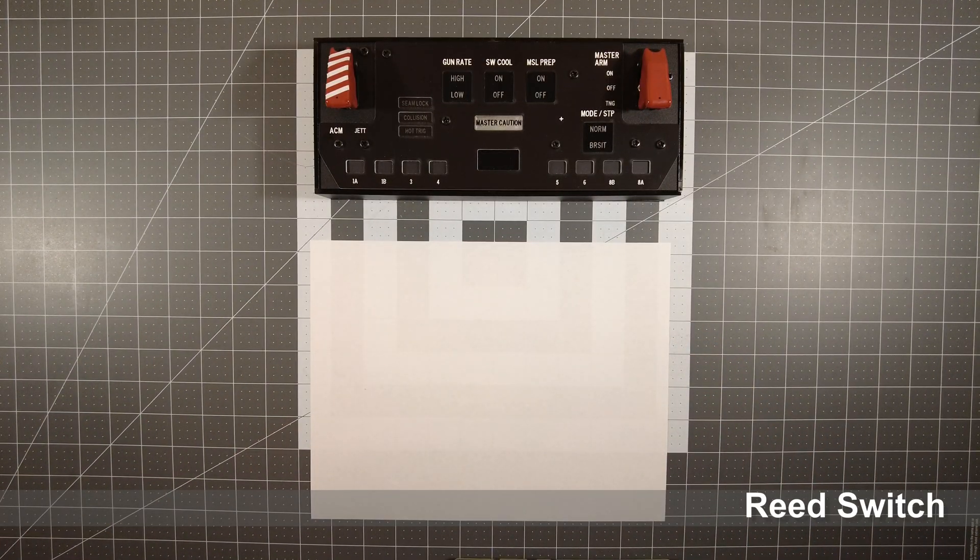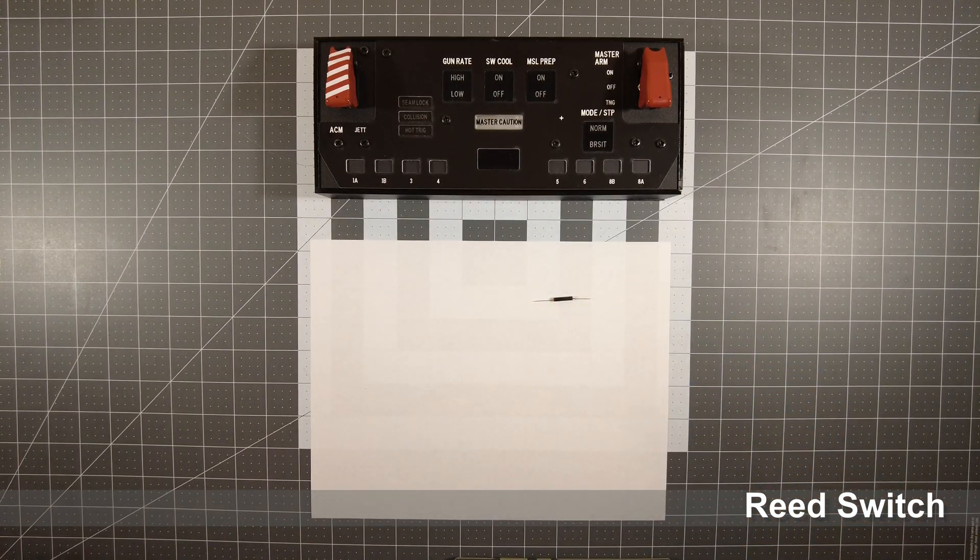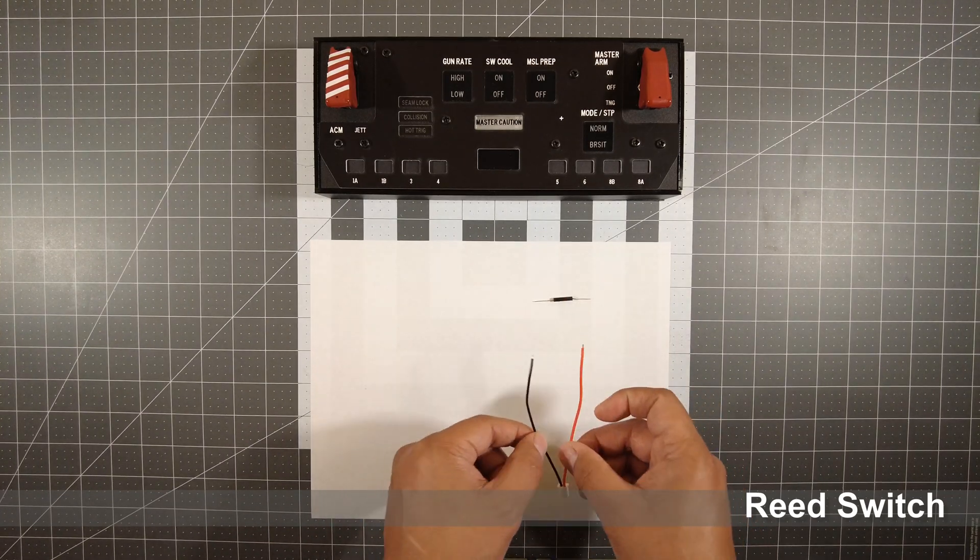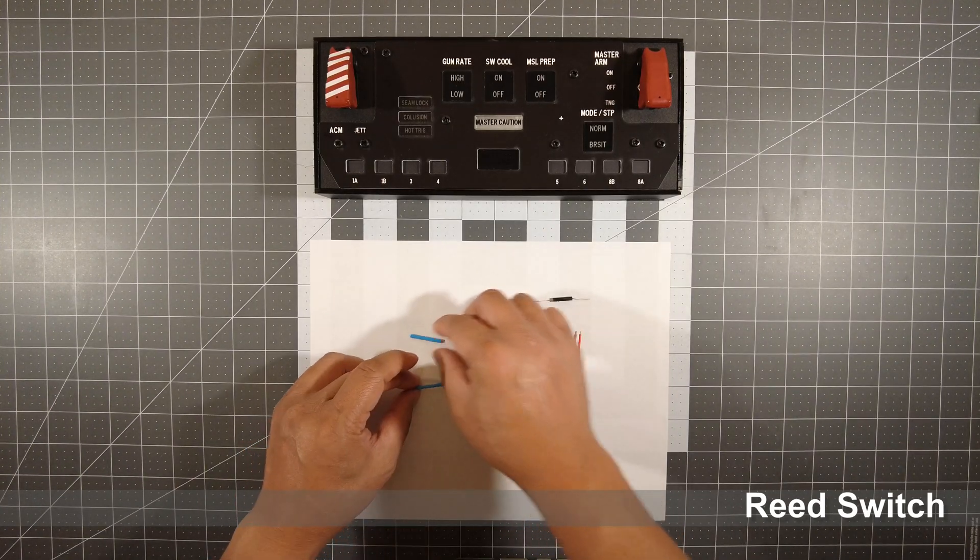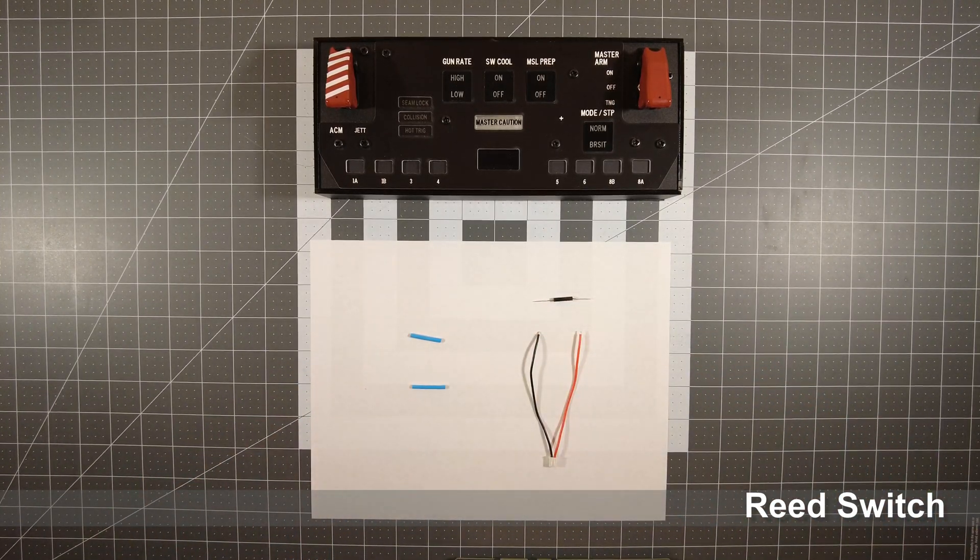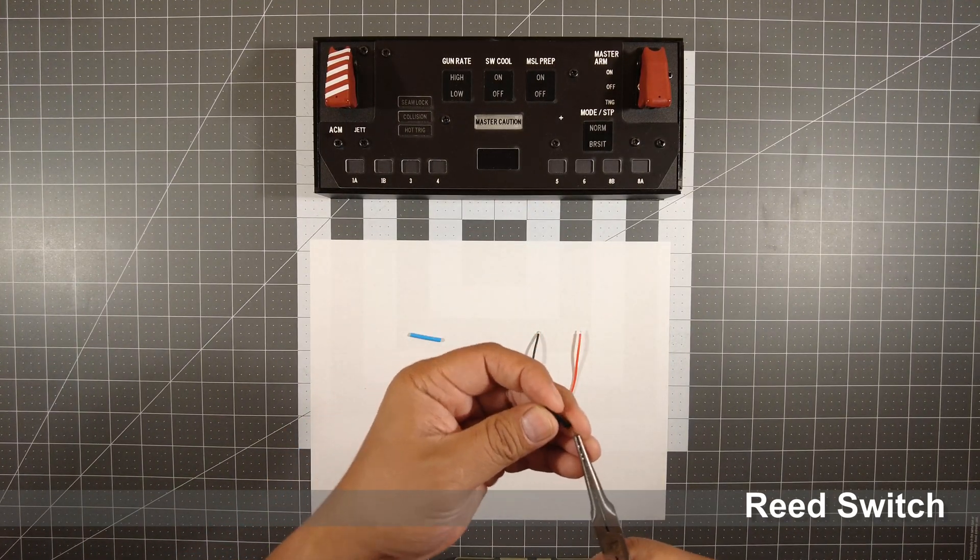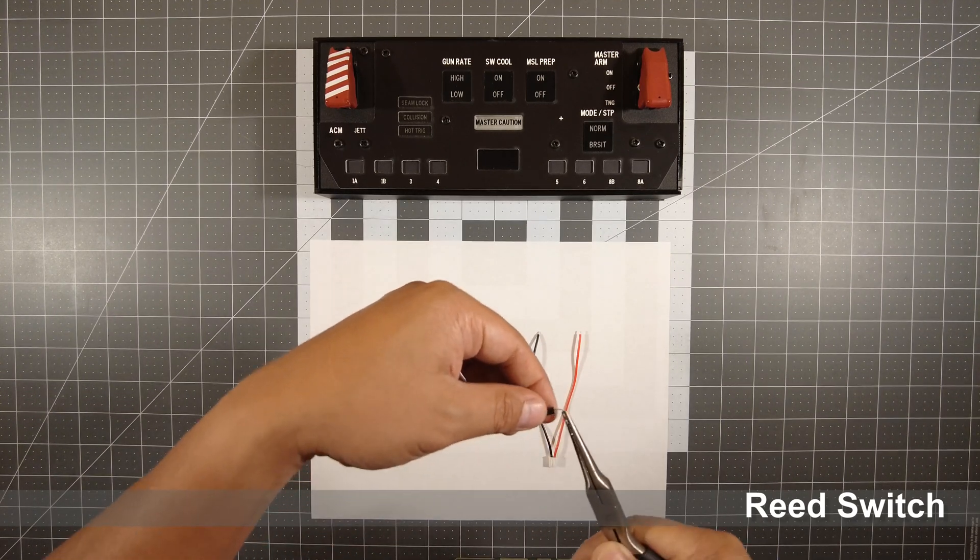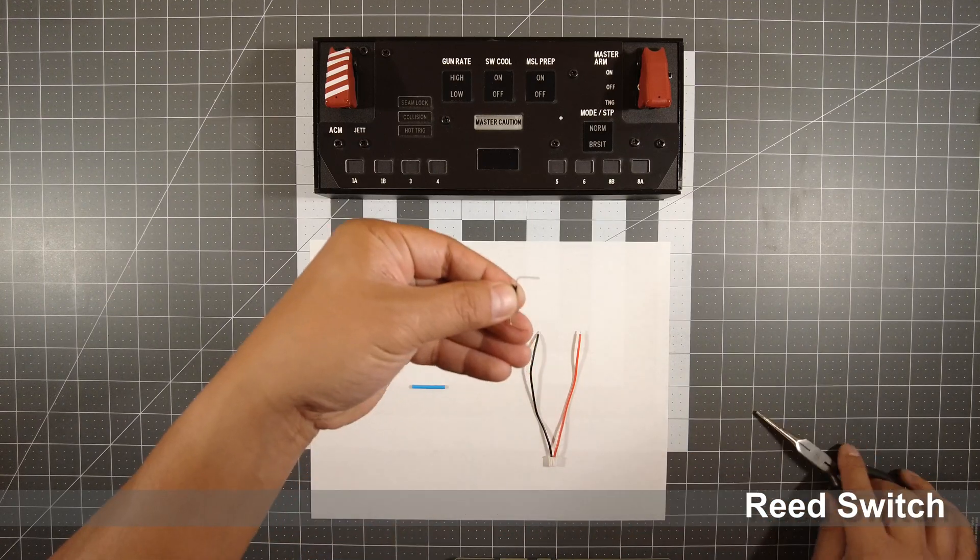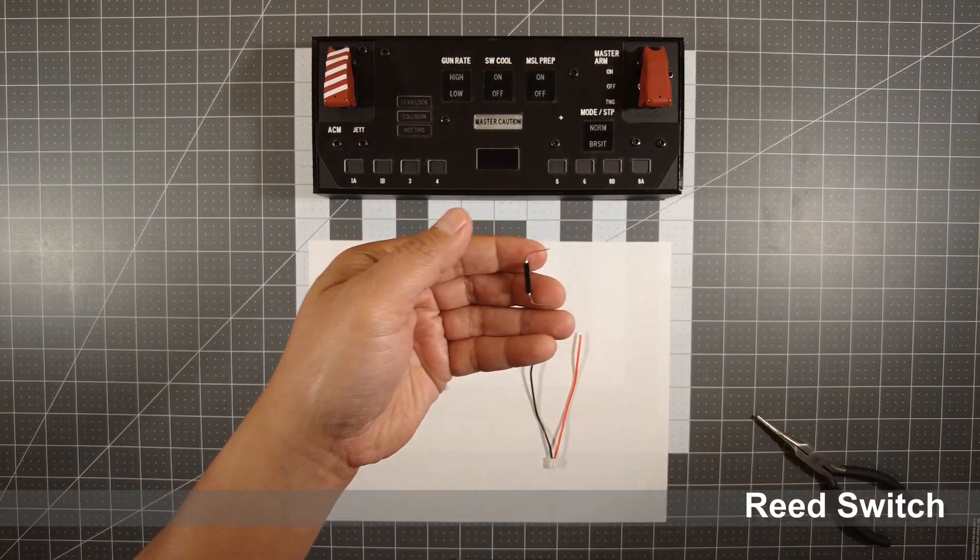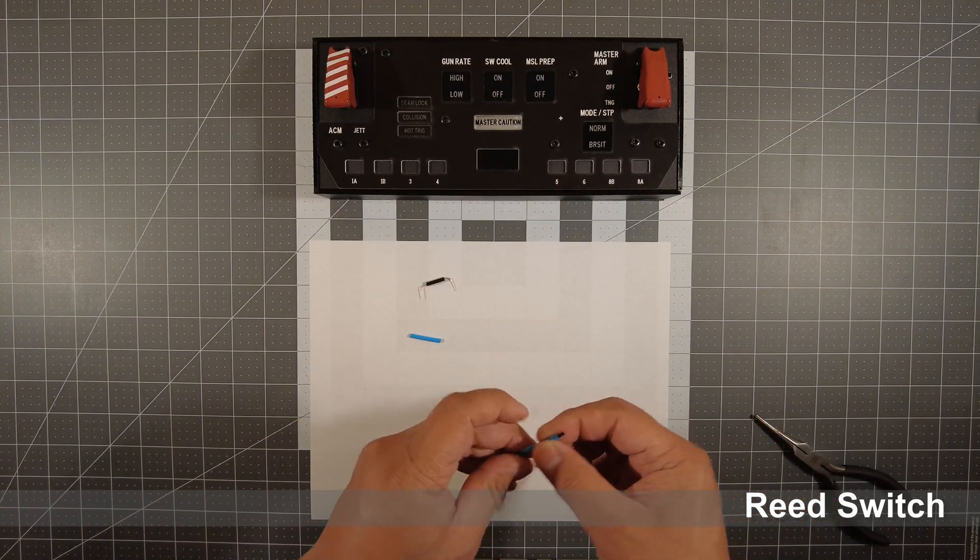Next step, we're going to assemble the reed switch. You're going to need one reed switch, JSD connectors with wire, and two pieces of shrink wrap cut to about an inch. Take your reed switch and bend the leads 90 degrees in one direction. Then take the shrink wrap and place it over the wires.